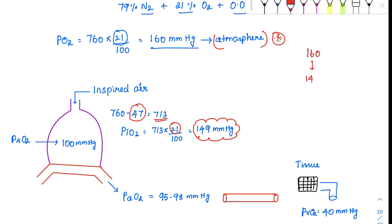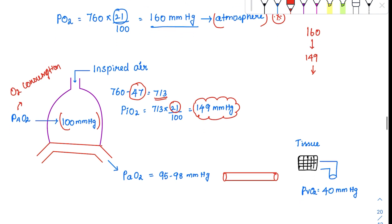And in the alveoli also, there is continuous oxygen consumption. Because of this oxygen consumption, the PO2 levels are further dropped down. It drops to around 100 mm Hg.